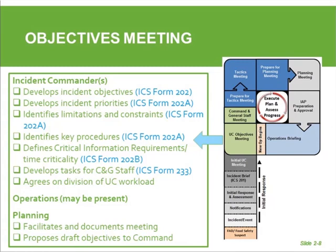Often the incident commanders will have a conference call with the multi-agency coordination group, which may consist of agency administrators from the lead agencies, prior to the objectives meeting. That ensures they've talked to their agencies and know the direction and priorities before walking into the objectives meeting. The Planning Section Chief often facilitates, and the planning section helps document this meeting and can also help propose draft objectives to the incident commanders if needed.